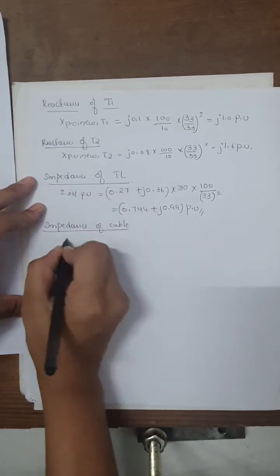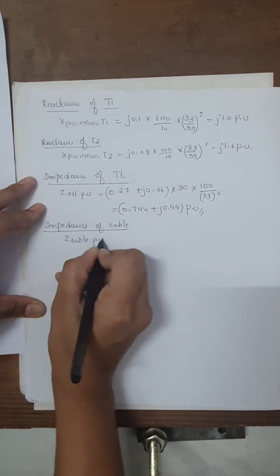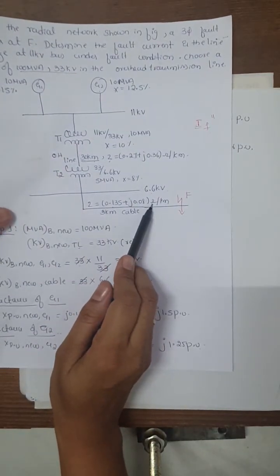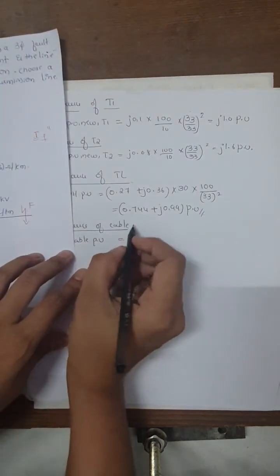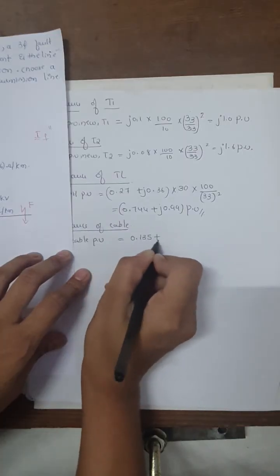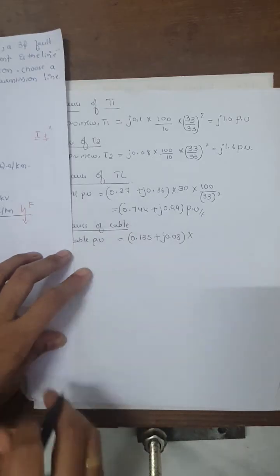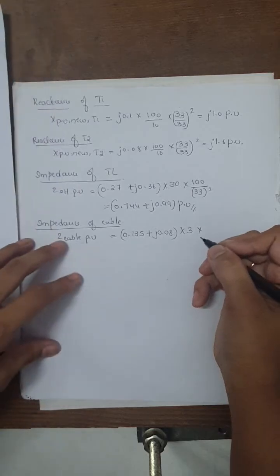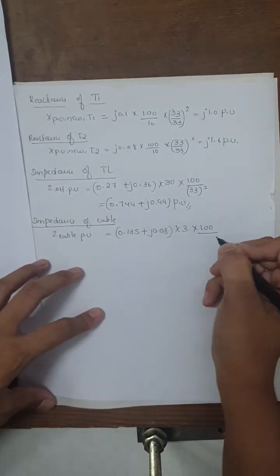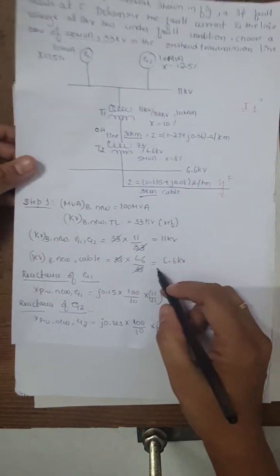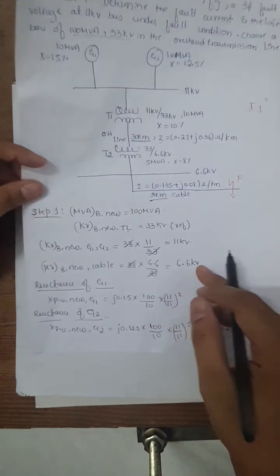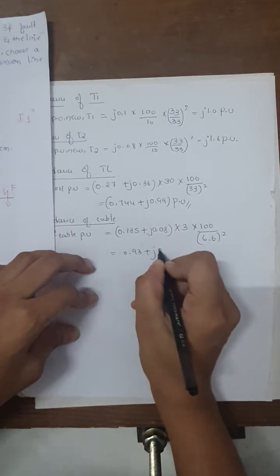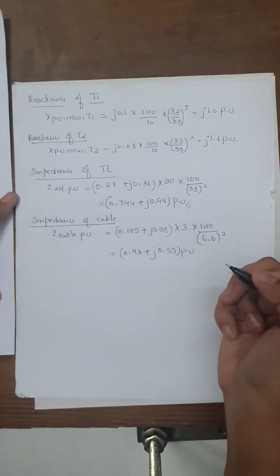For the underground cable impedance in per unit: the given impedance is (0.135 + j0.08) ohms per km, multiplied by the cable length of 3 km, then multiplied by MVA base (100) divided by the cable base voltage squared (6.6 squared). The result for the underground cable is (0.93 + j0.55) per unit. The reactance and impedance calculations are now complete.